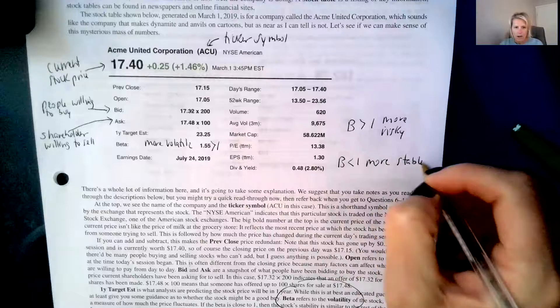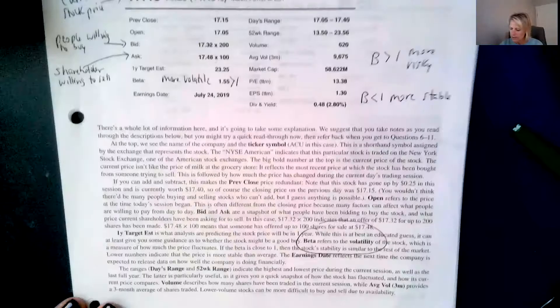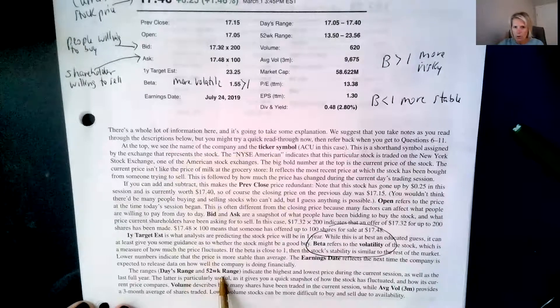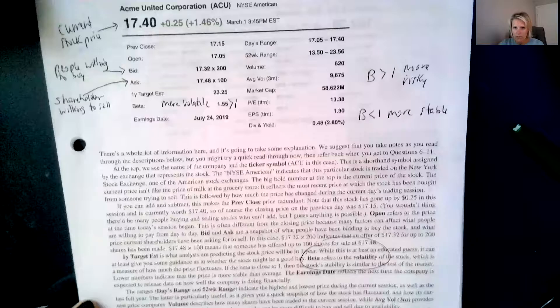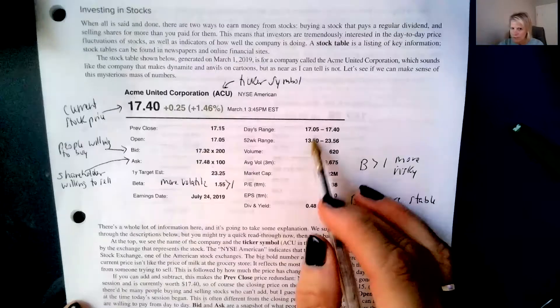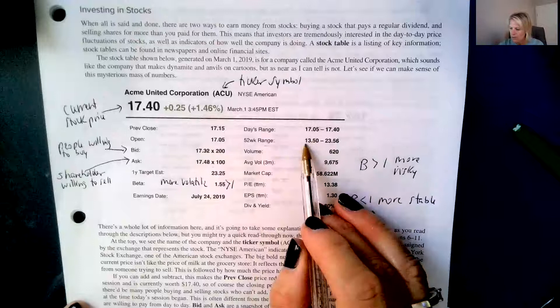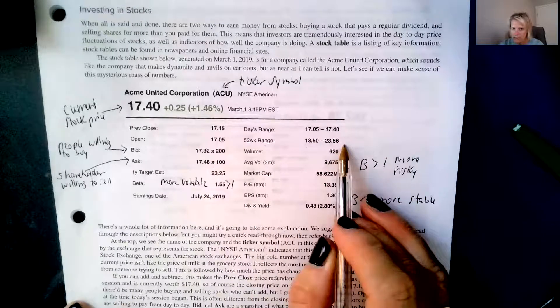Okay, we have the day's range and the 52 week range. Those are pretty self explanatory meaning the low for the year, the 52 week range is the low for the year and the high for the year. And then up above is the low for the day and the high for the day.